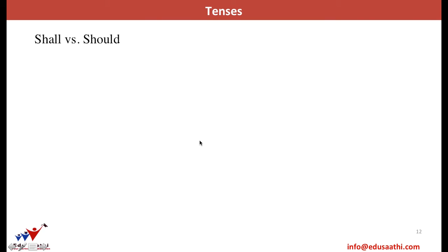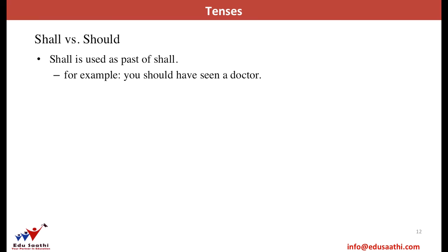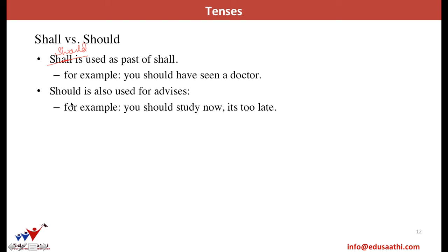Let us differentiate between the use of 'shall' and 'should.' Like 'would' is the past of 'will,' 'should' is used as the past of 'shall.' For example, 'You should have seen a doctor' — you are saying that you must have done something in the past, so you say 'you should have seen the doctor,' not 'you shall have seen the doctor,' because 'you shall' would mean you still need to see the doctor. Second, 'should' is used to advise someone — for example, 'You should study now, it's too late' means I am advising you that it will be good for you if you study.